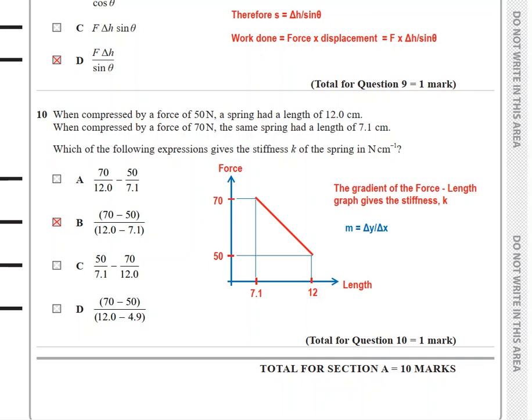Answer is B. Let's see why. When you look at the shape of the graph, it's a compressive force, so when you increase the force, the length decreases. Once you have a graph of force against length, the gradient always gives the spring constant or in other words the stiffness. So change in y-axis divided by change in x-axis: this is the change in y-axis, 70 minus 50, and change in x-axis would be 12 minus 7.1. That's why the answer is B.